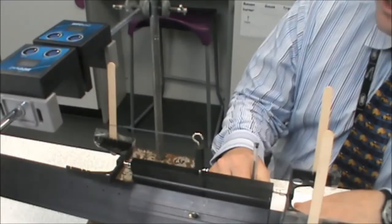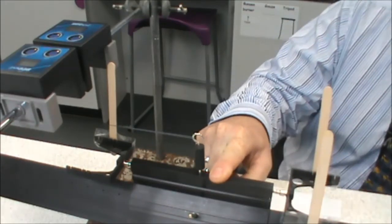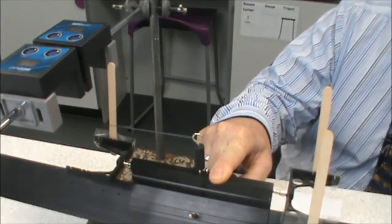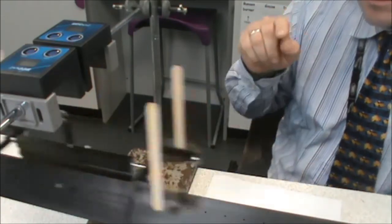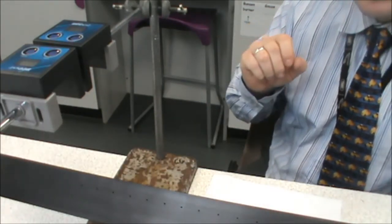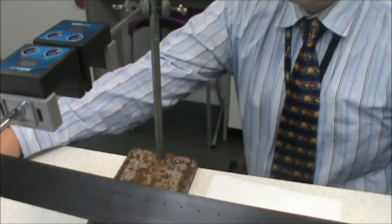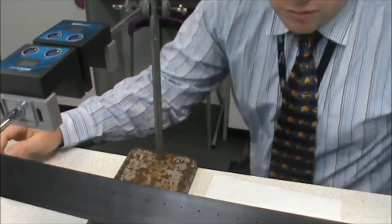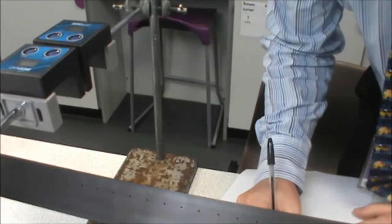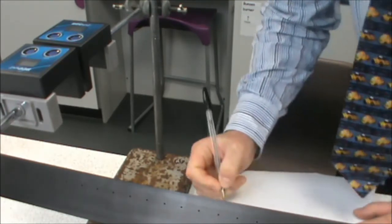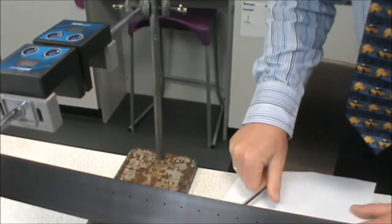So we make sure that our light gates are set up ready. We hold on to the glider. Turn the blower on. And when we're ready, let go of the glider. And it accelerates to the other end. Turn the blower off and now we can read our results from the light gates. We have a final speed of 1.08 metres per second and a time of 0.34 seconds.